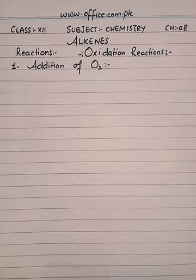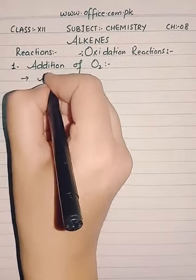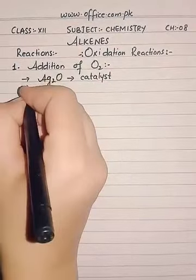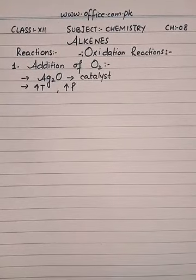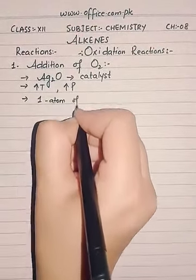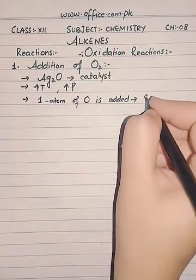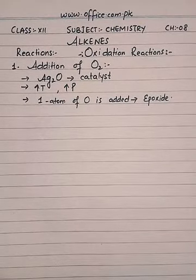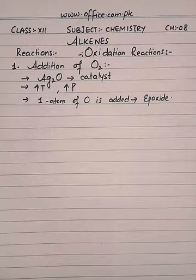When alkenes are mixed with oxygen in the presence of silver oxide as catalyst, at high temperature and high pressure, one atom — not a molecule, one atom — is added to alkenes. The resulting product is known as an epoxide. Epoxides are very important from an industrial point of view because they are used as starting substances at the industrial level for the production of glycols.